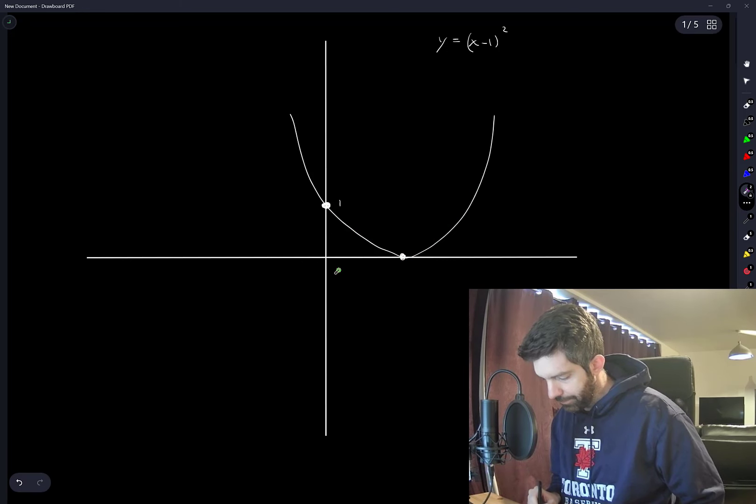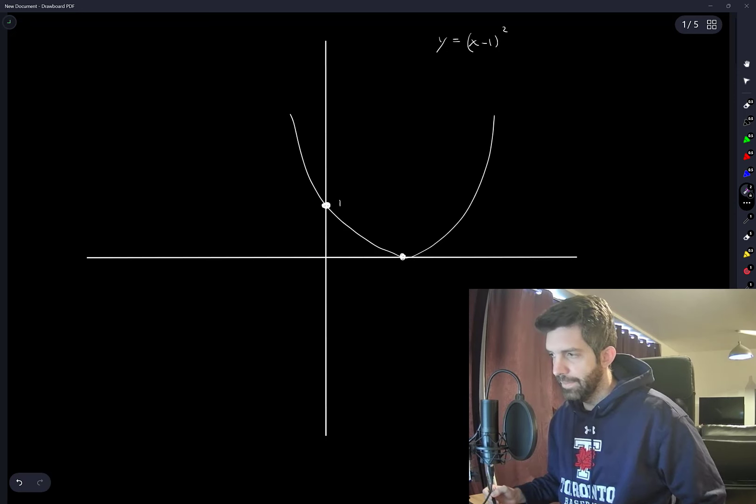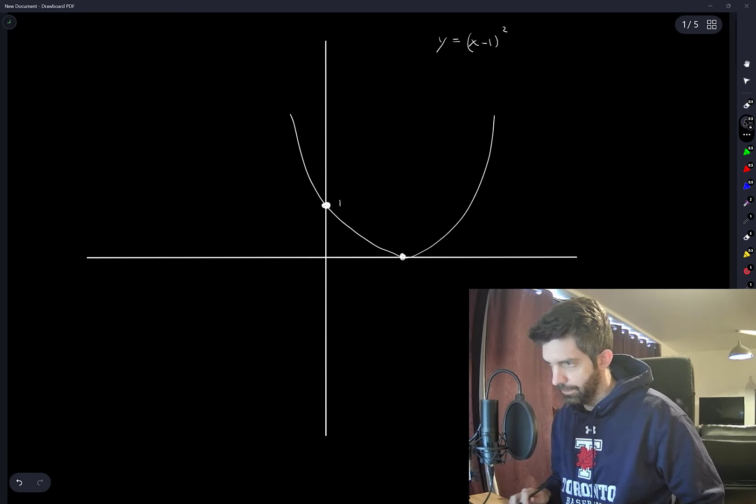If k is negative, it has to be large enough in magnitude so that it intersects this parabola up here, and the only option that's valid here is C.